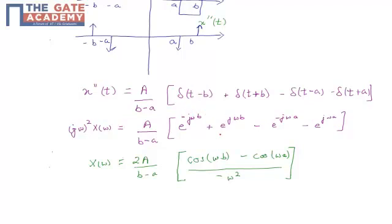This part is nothing but cos omega b. Again this part would be cos omega a. Actually it should be twice cos omega b and twice cos omega a.